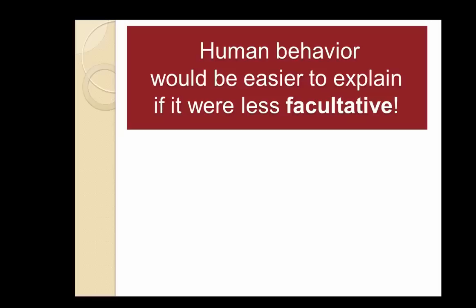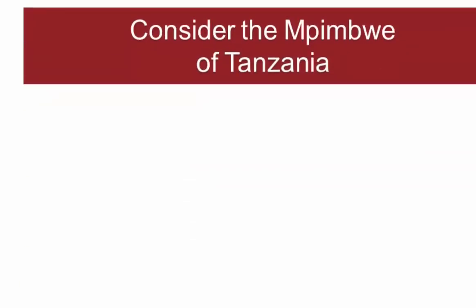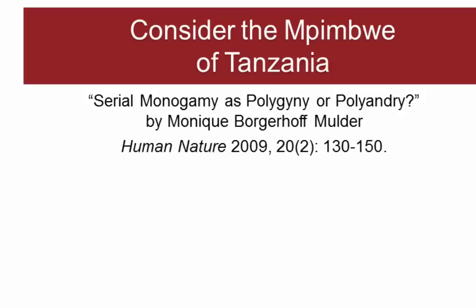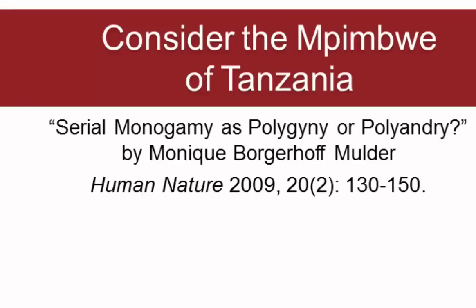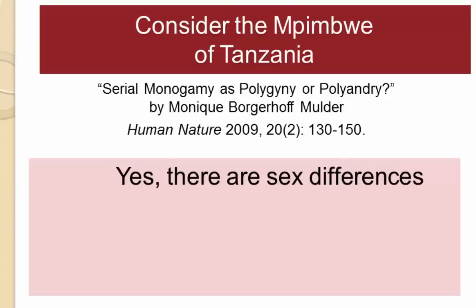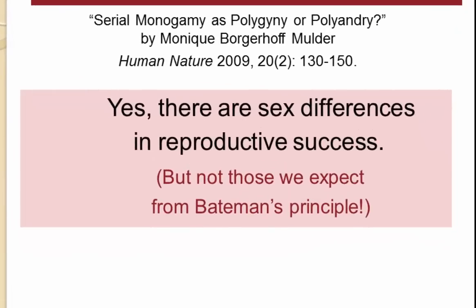Human behavior would be much easier to explain if it were less variable. The term applied here is 'facultative': behavior is facultative when it varies in expression depending on ecological circumstances, and human behaviors are for the most part enormously facultative, making clear explanatory rules difficult. To illustrate, we'll look at a recent study of the Impimboy of Tanzania, carried out by Monique Borgerhoff Mulder, reported in a paper called 'Serial Monogamy as Polygyny or Polyandry,' which questions the universality of Bateman's principle.